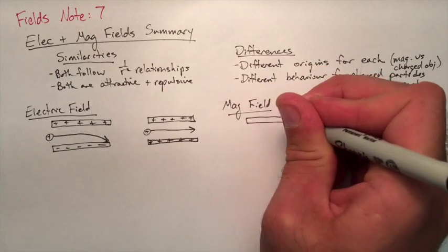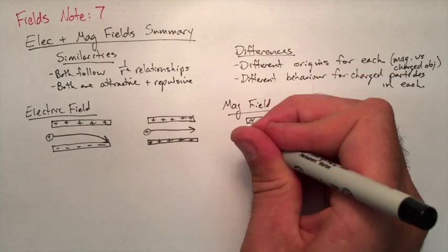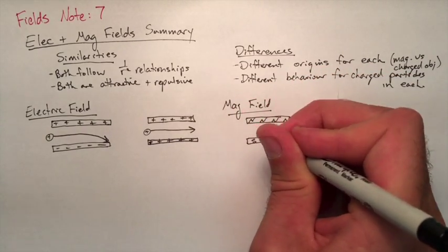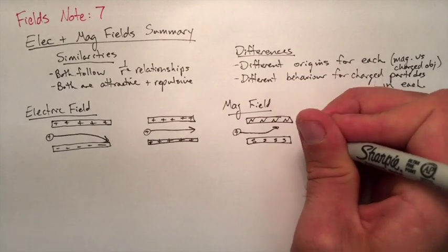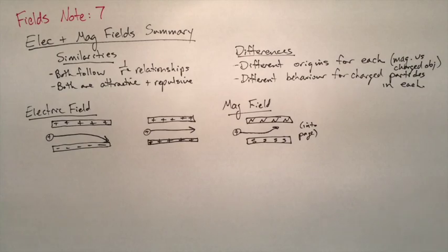If we look at a magnetic field, let's say on the top plate we have like a north polarity. On the bottom plate we have a south polarity. If we throw a proton into there, it's going to veer into the page.